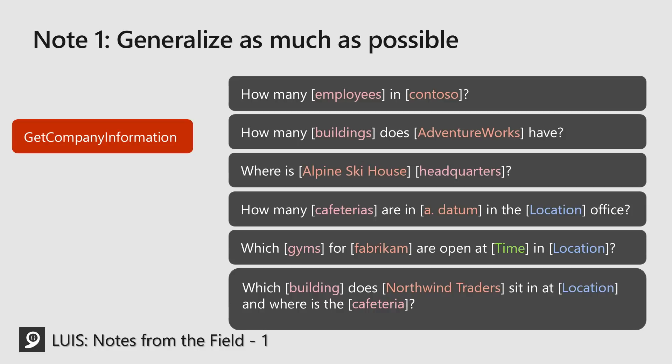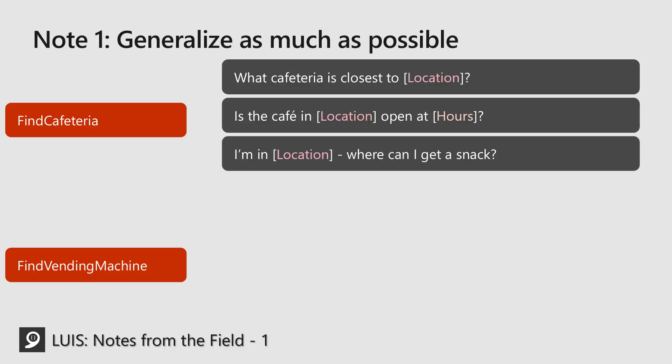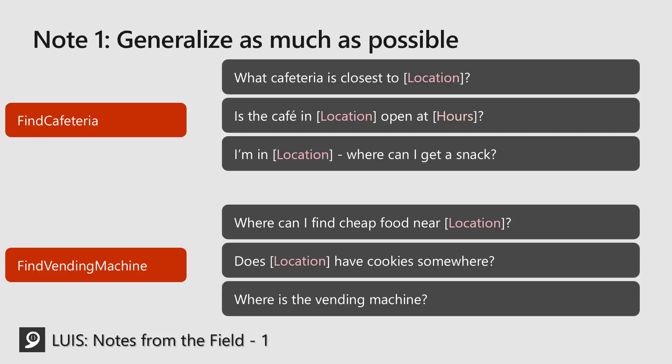One thing I've seen people do is break these massive intents into smaller sub-intents, and that can work really well. On the flip side, if you have too many intents, that's going to cause issues as well. For example, if we have two sub-intents of 'find cafeteria' and 'find vending machine,' they both have optional entities of location and hours, but there might be overlap — like 'where can I get a snack?' or 'where can I find cheap food near me?' So I'm telling you not to have too many intents, but not so few either. It's about finding a balance, and there's no exact science.